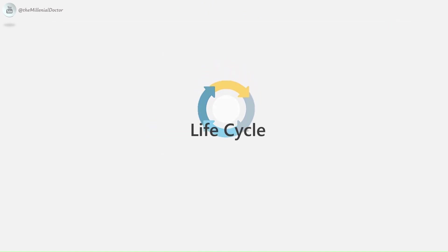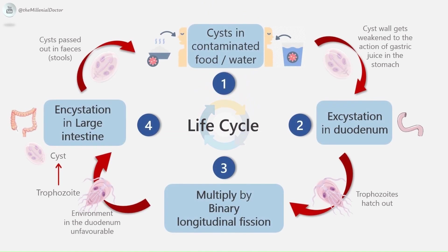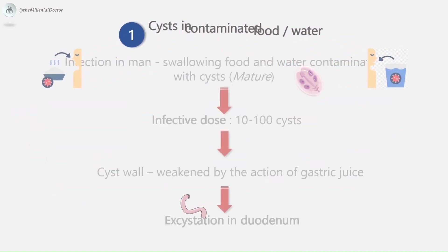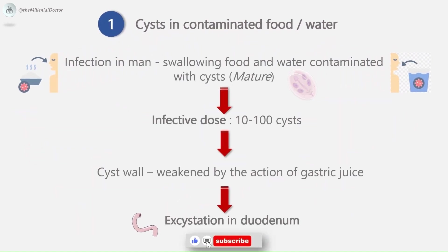The life cycle is divided into four stages. First, the presence of cysts in contaminated food and water. Second, excystation in the duodenum. Third, multiplication by binary longitudinal fission. Fourth, encystation in the large intestine. Mature cysts are the infective forms, introduced into the body by the feco-oral route. The infective dose is around 10 to 100 cysts. Gastric acidity weakens the cyst wall, and excystation is completed in the duodenum due to pancreatic enzymes.